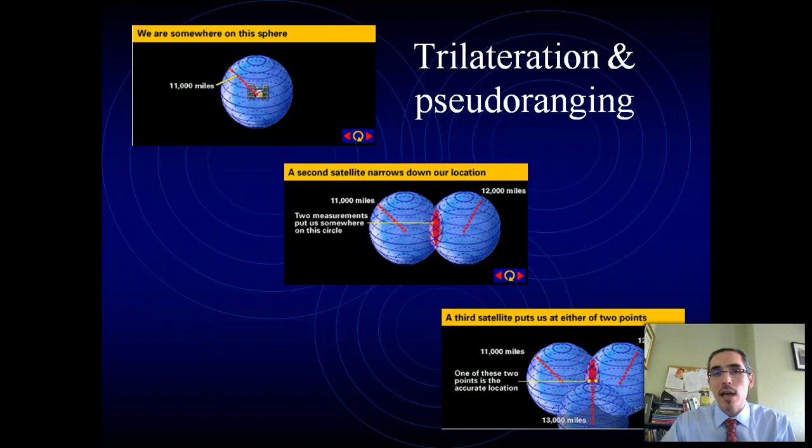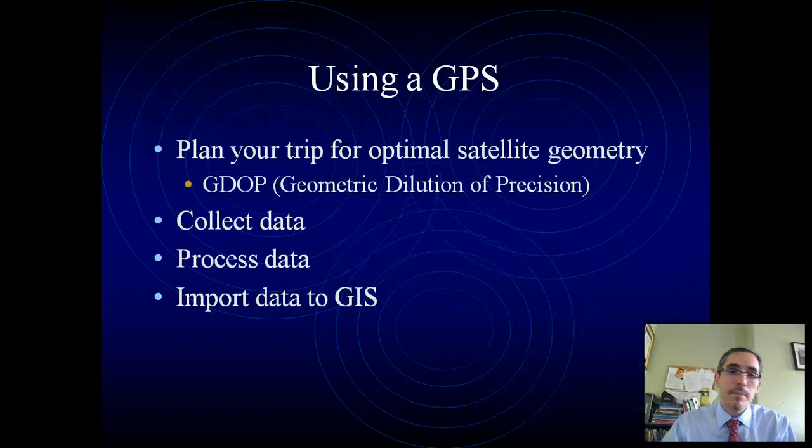It calculates how far you are from four known satellite positions. And ideally, even more than that. Most modern GPS systems, in fact, do more in order to increase the precision of the reading about exactly where you are on Earth.